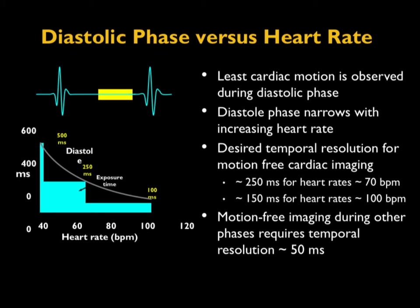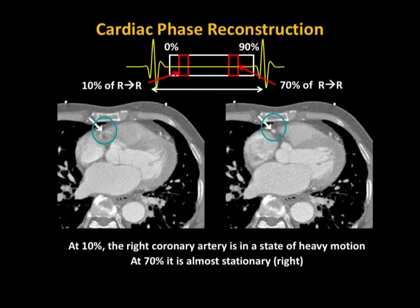Shown here are two cardiac images reconstructed at different points in the R-to-R cycle. If the image is reconstructed close to the systolic phase — at 10% of the R-to-R peak — the coronary segment is not focused due to a lot of motion. If the same image is reconstructed at 70% from the R peak, in the more quiescent diastolic phase, the coronary artery appears much more focused. This is why cardiac reconstruction is preferred in the diastolic phase.